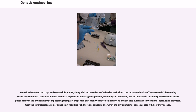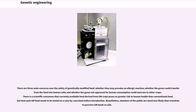Other environmental concerns involve potential impacts on non-target organisms, including soil microbes, and an increase in secondary and resistant insect pests. Many of the environmental impacts regarding GM crops may take many years to be understood and are also evident in conventional agriculture practices. With the commercialization of genetically modified fish, there are concerns over what the environmental consequences will be if they escape. There are three main concerns over the safety of genetically modified food: whether they may provoke an allergic reaction, whether the genes could transfer from the food into human cells, and whether genes not approved for human consumption could outcross to other crops. There is a scientific consensus that currently available food derived from GM crops poses no greater risk to human health than conventional food, but that each GM food needs to be tested on a case-by-case basis before introduction. Nonetheless, members of the public are much less likely than scientists to perceive GM foods as safe.